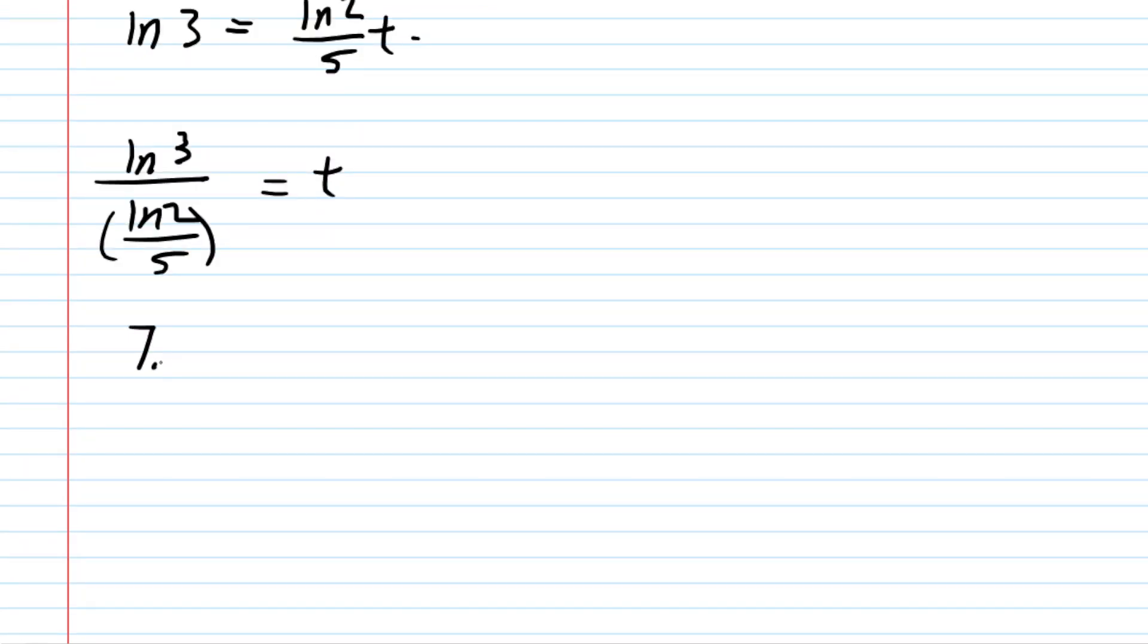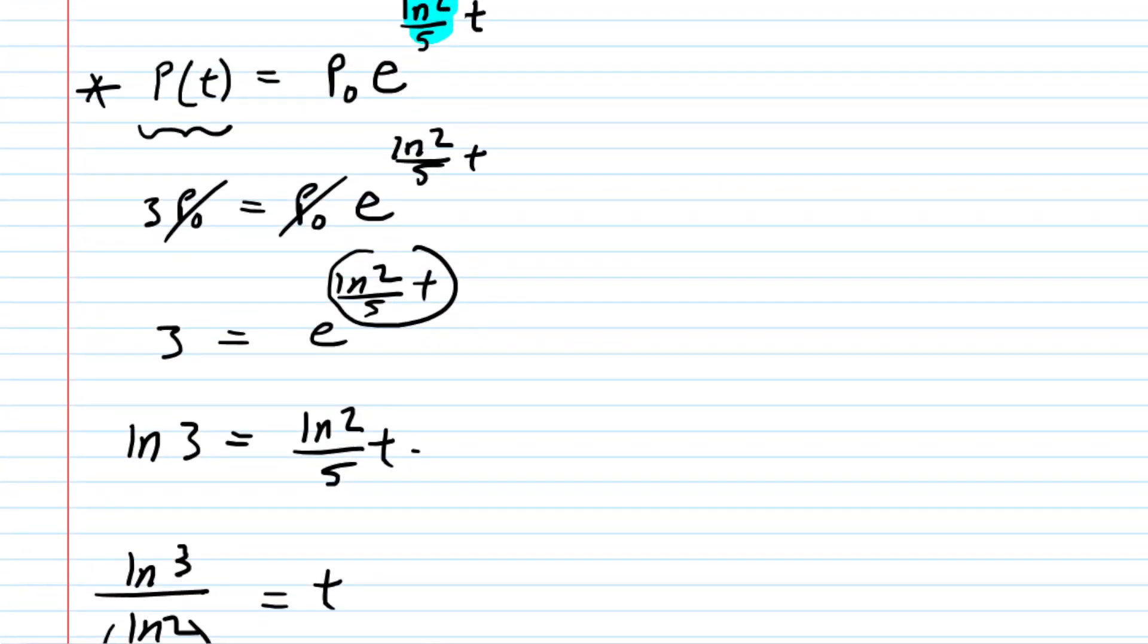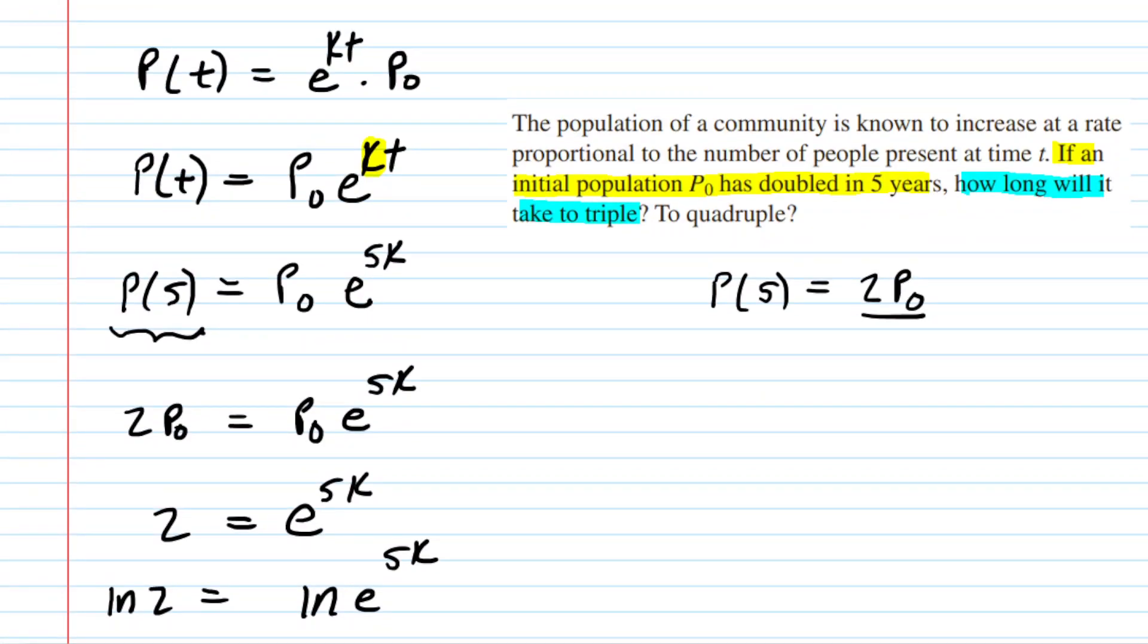You should get approximately 7.9 years. And so that is the answer for the first question, the time required to triple the population. We go back and look at the second part of the question, and it's very similar.